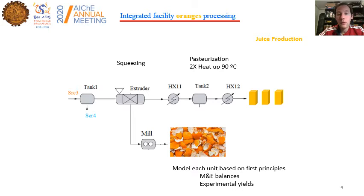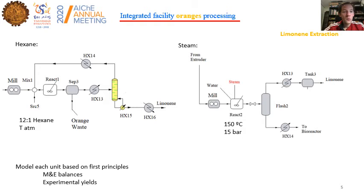On the other hand, we have the residue — the peels of the oranges. We model each one of these units based on experimental data as well as mass and energy balances. Once we have the peels, we are going to process them to obtain a high added-value extract: limonene.